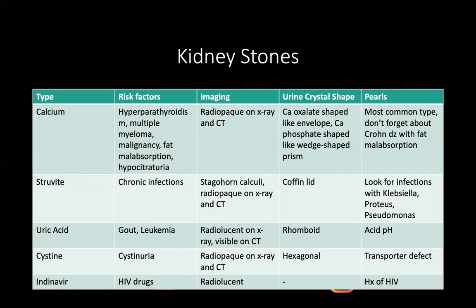Struvite stones are composed of ammonium magnesium phosphate and form staghorn calculi, which fill the entire renal pelvis. They're usually due to chronic infections from organisms like Klebsiella, Proteus, Pseudomonas, and Staphylococcus saprophyticus. They are radiopaque on X-ray and CT, fill the entire renal pelvis, and the crystal shape looks like a coffin lid — a very telling clue for struvite stones.